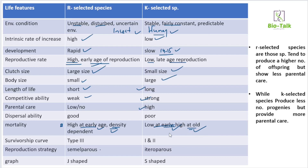Survivorship curves are relevant here: Type I survivorship corresponds to K-selected species, Type III to r-selected species. Type III organisms produce a large number of offspring but most die young. The r and K strategy relates to resource allocation — r-selected species allocate resources to quantity, K-selected to quality.